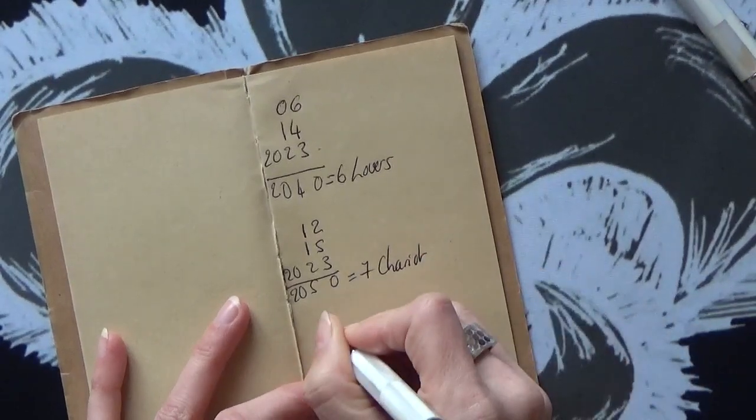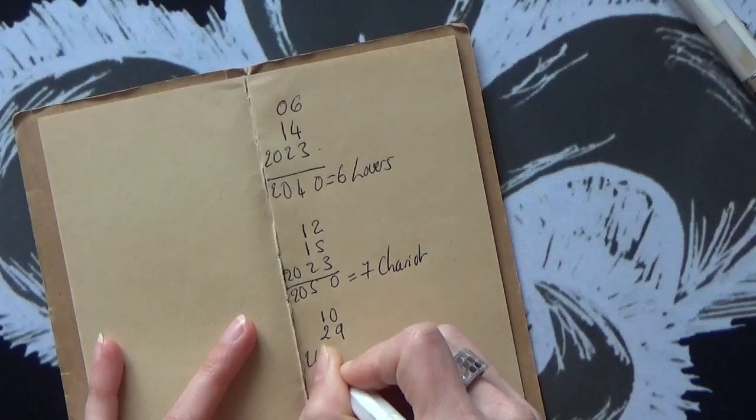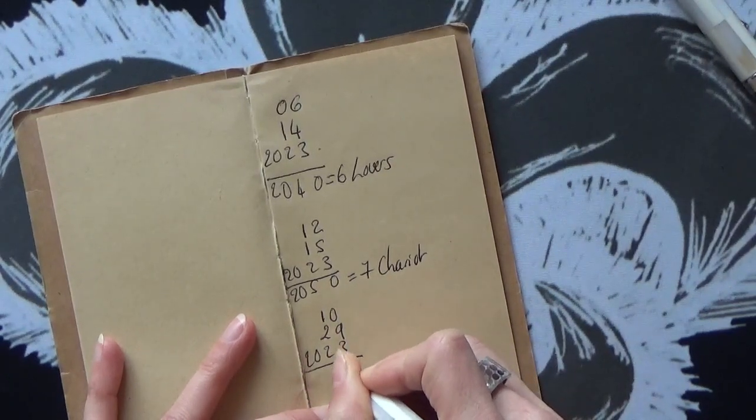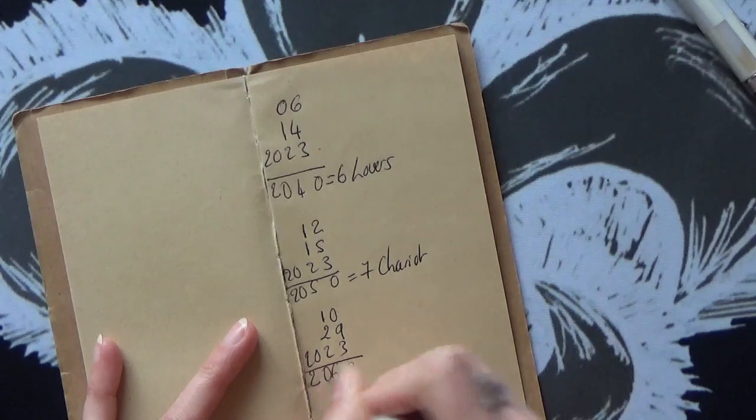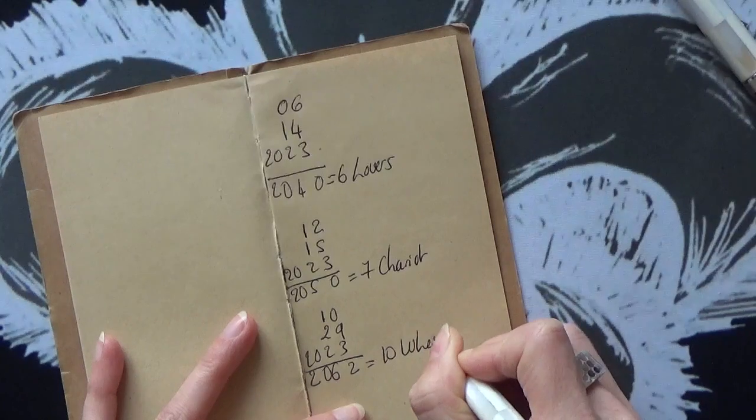Let's say you're born in October the 29th, 2023. Now this would give you 10, that would be the Wheel of Fortune.